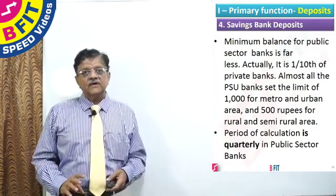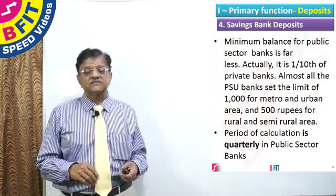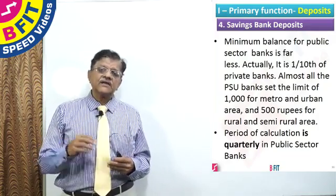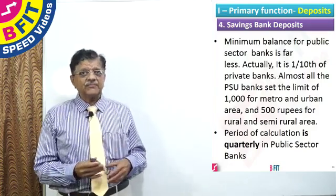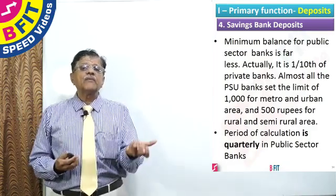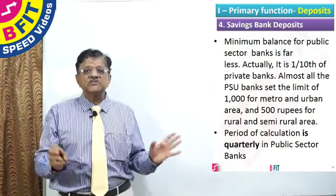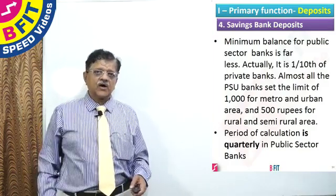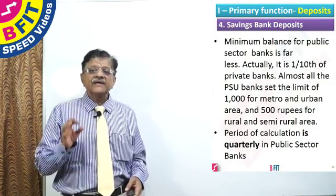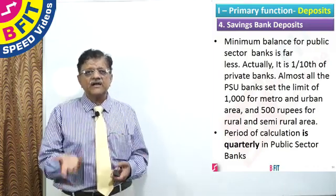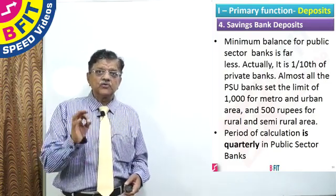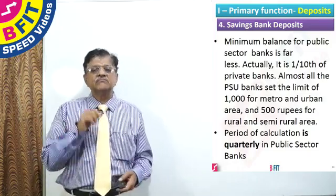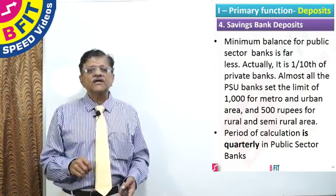There is another advantage: public sector banks calculate quarterly average balance instead of monthly average balance. While private sector banks calculate monthly average minimum balance, most public sector banks calculate quarterly average balance, which is advantageous to the customer. For example, if in any quarter a few days you don't have the minimum balance but on other days you have more, when you calculate the average it will be sufficient and you will not be charged the penalty. Therefore if you have a savings bank account, you must know whether you need to maintain monthly or quarterly average balance — MAB (monthly average balance) or QAB (quarterly average balance) — depending on whether it is a private or public sector bank.